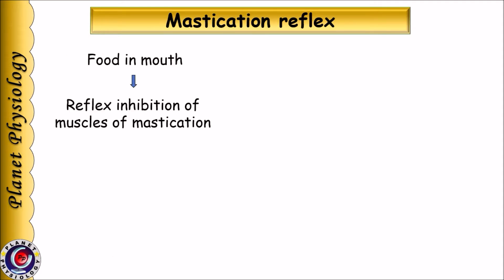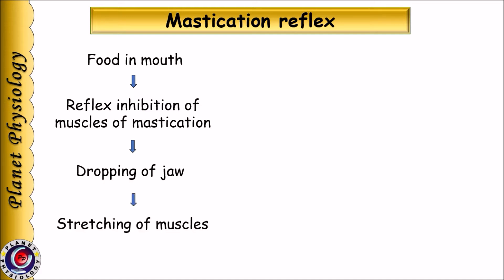Now let us study the process of mastication. It is a reflex phenomenon which begins with placing of food in the oral cavity. This causes reflex inhibition of muscles of mastication. The muscles of mastication are temporalis, masseter, and pterygoids. Inhibition of these muscles leads to drooping of jaw and causes them to stretch.